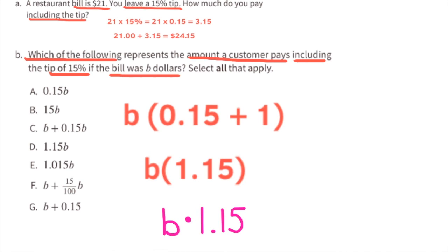That's a match with c. This represents b times 0.15 plus b times one. Since 0.15 plus one is 1.15, we can write this as b times 1.15. The order doesn't matter. We can multiply 1.15 times b, and it has the same value. This is a match with d. The only matches are c, d, and f.